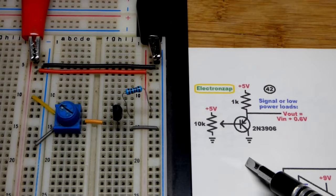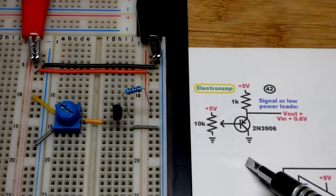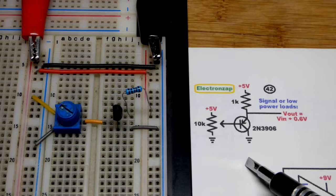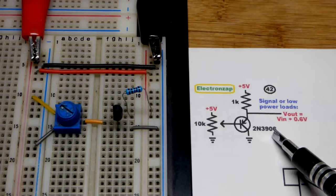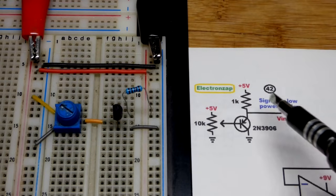So now in the last video we looked at the NPN bipolar junction transistor emitter follower which is more common than the PNP version which we're going to look at in this video. Whatever you can make with NPN you can make with PNP but polarities are opposite.